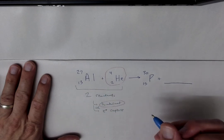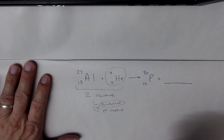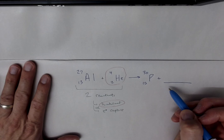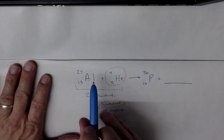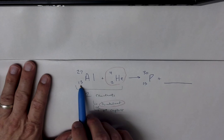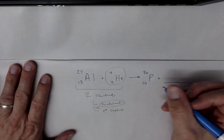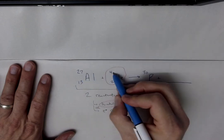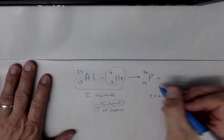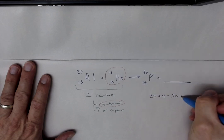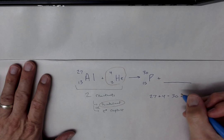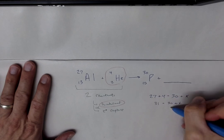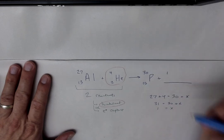So now let's actually solve this and figure out what the mystery item is. I'm going to do my idea of conservation of mass number and conservation of atomic number. So with mass number, 27 plus 4 equals 30 plus x, x being my mystery item. This is 31 equals 30 plus x, so x equals 1.